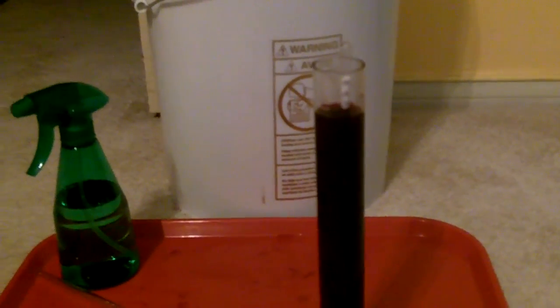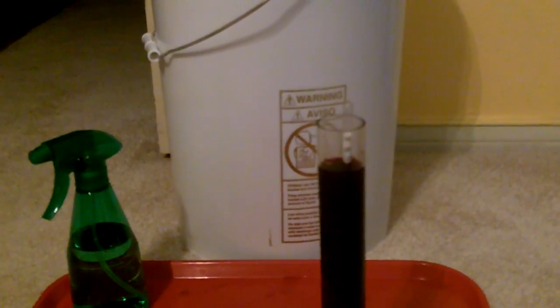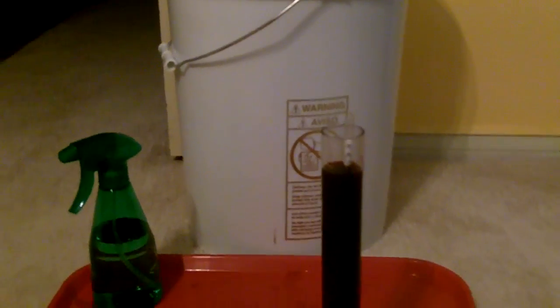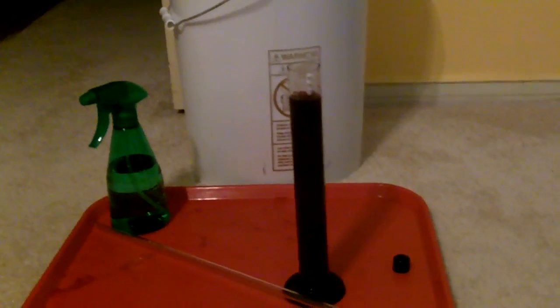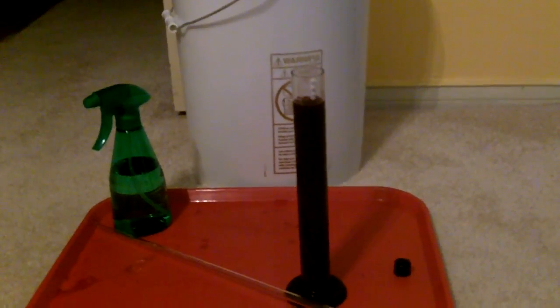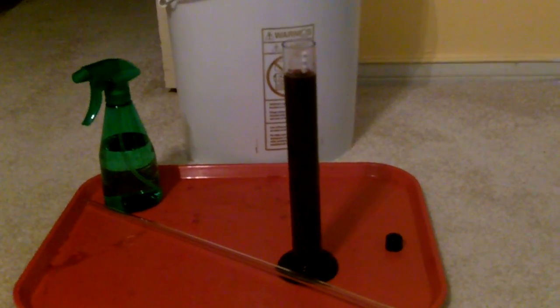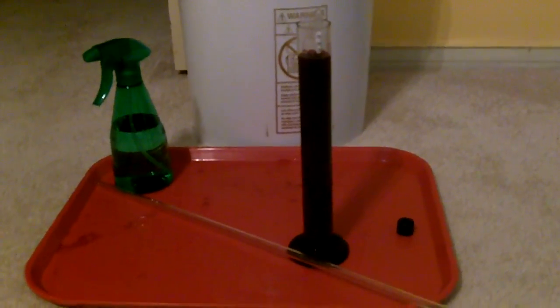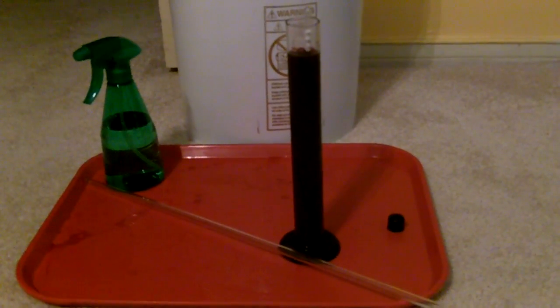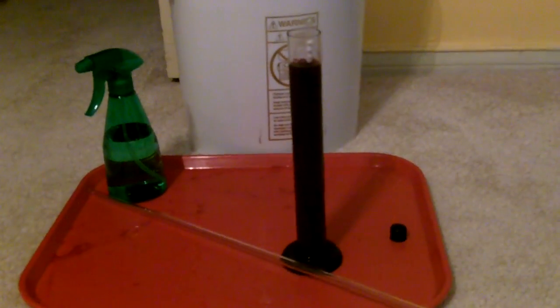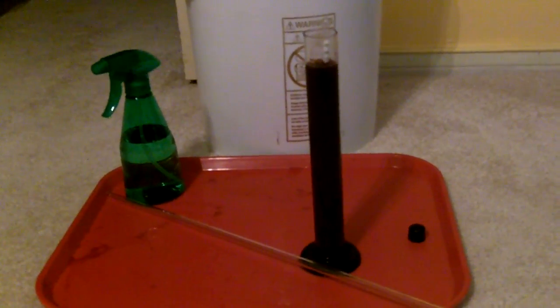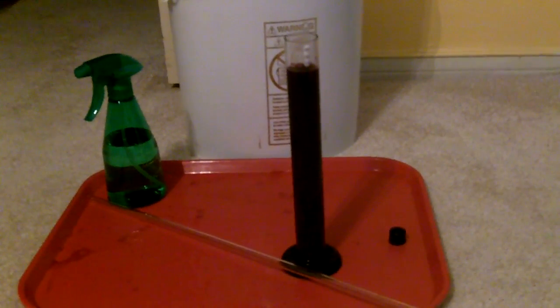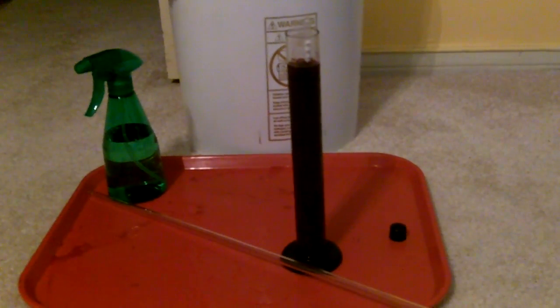The sugar pushes the hydrometer up. So the more sugar that you have in the testing tube, the higher the hydrometer is going to rise. The more alcohol you have in the testing tube, then the hydrometer is going to sink to the bottom.